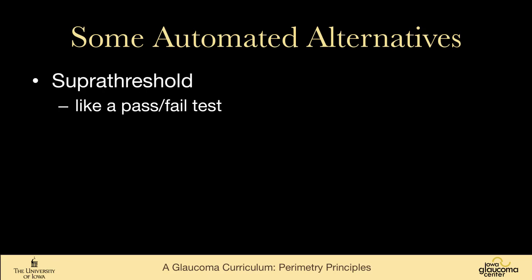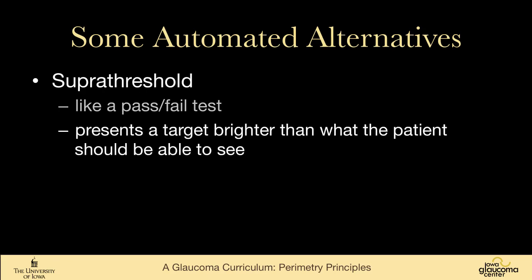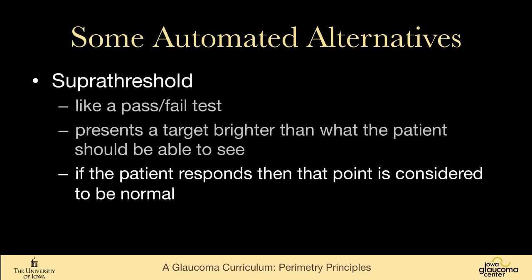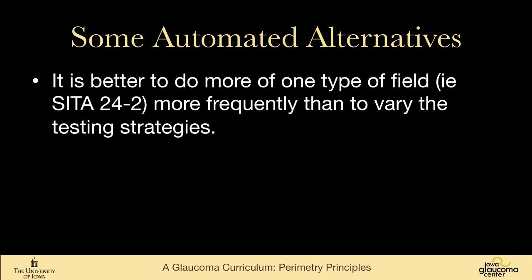Supra-threshold perimetry is like a pass-fail test — the perimeter presents a target brighter than what the patient should be able to see, and if the patient sees it, that point is considered normal and the test moves on. This is a strategy for screening, not for following someone with glaucoma. An important point: it's better to stick with one kind of test and do it more frequently than to move between different tests. It's better to do a SITA 24-2 every six months to a year rather than alternating between SITA, matrix, and SWAP, as it'll take much longer to detect change.